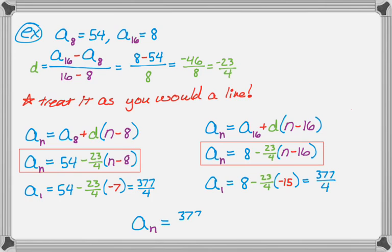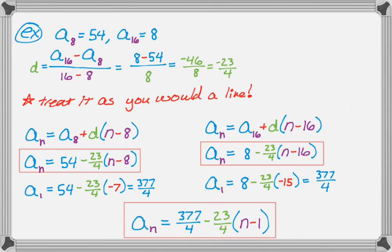So I could, in terms of the first term of the sequence, write that a sub n is 377 over 4 minus 23 over 4 times the quantity n minus 1. And that's how they work. So I hope you found this helpful, and good luck.